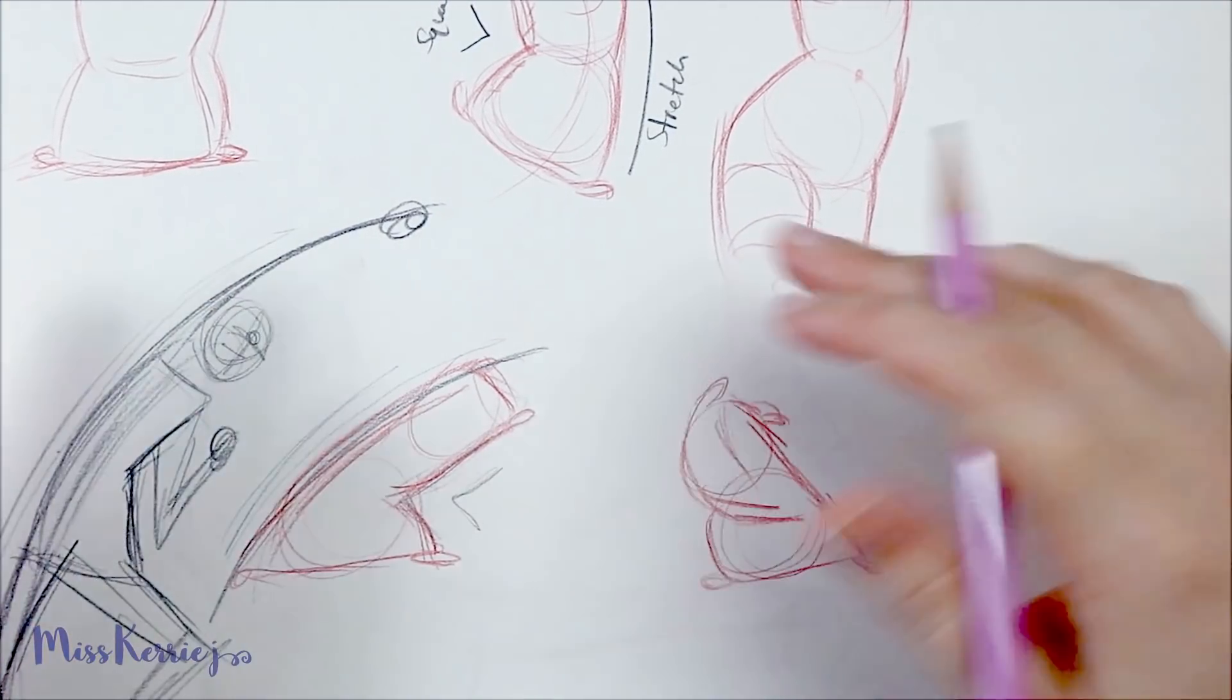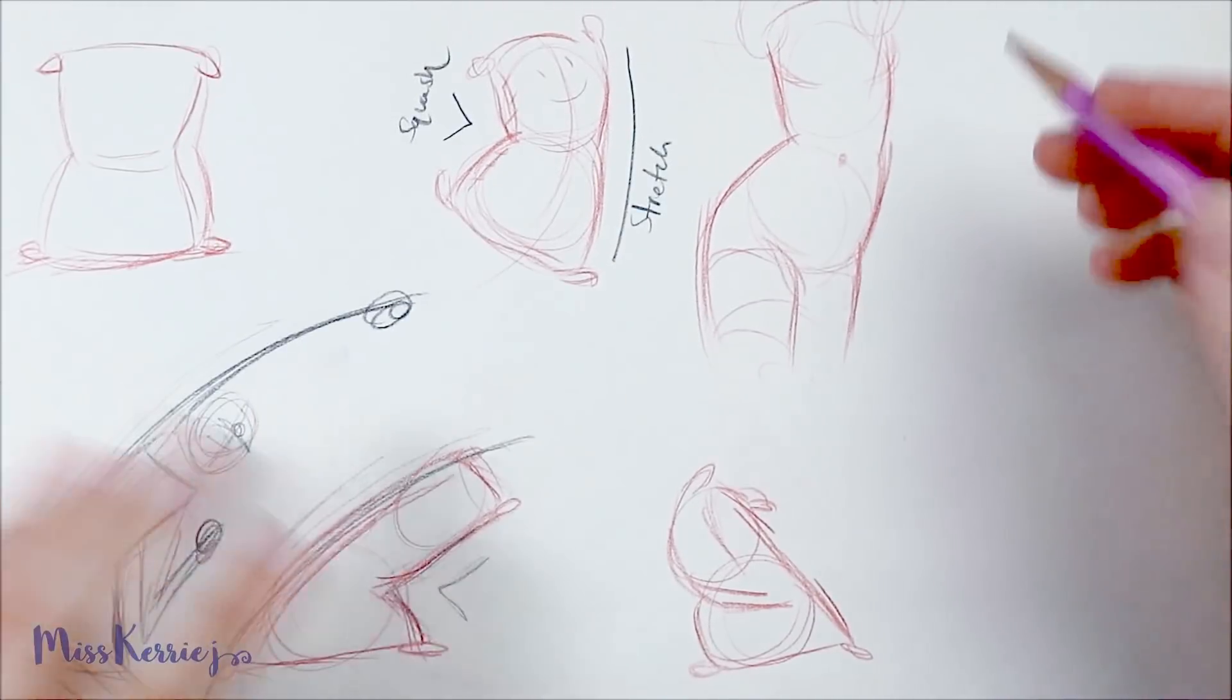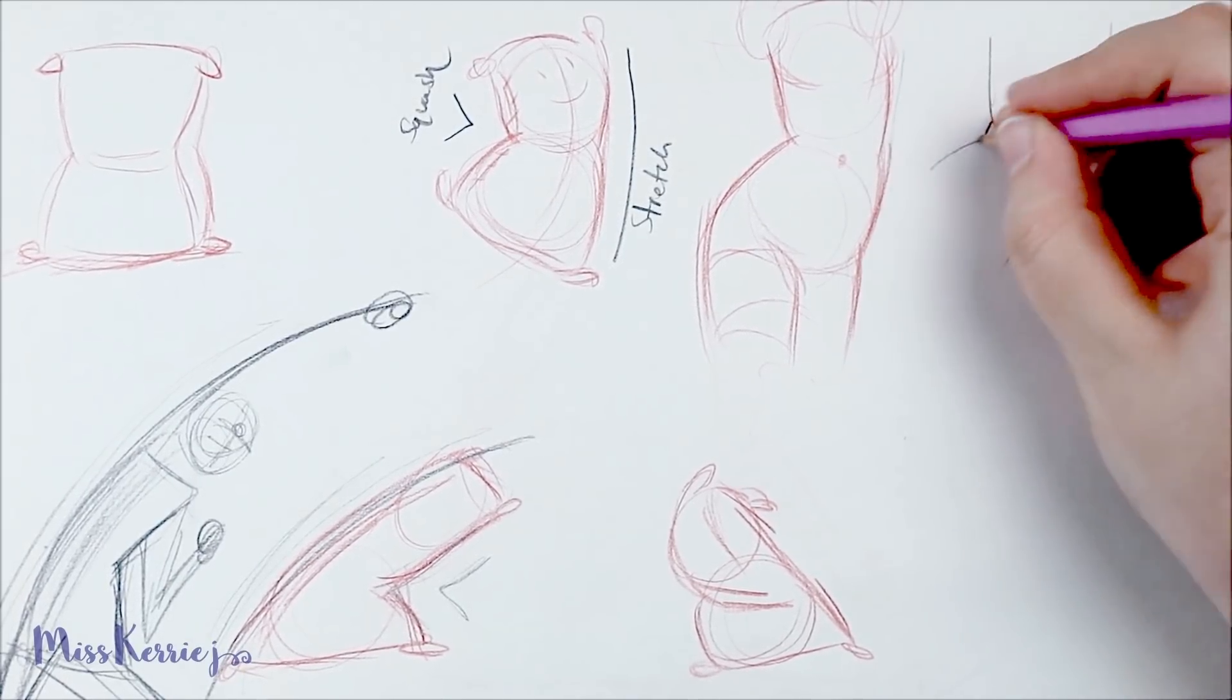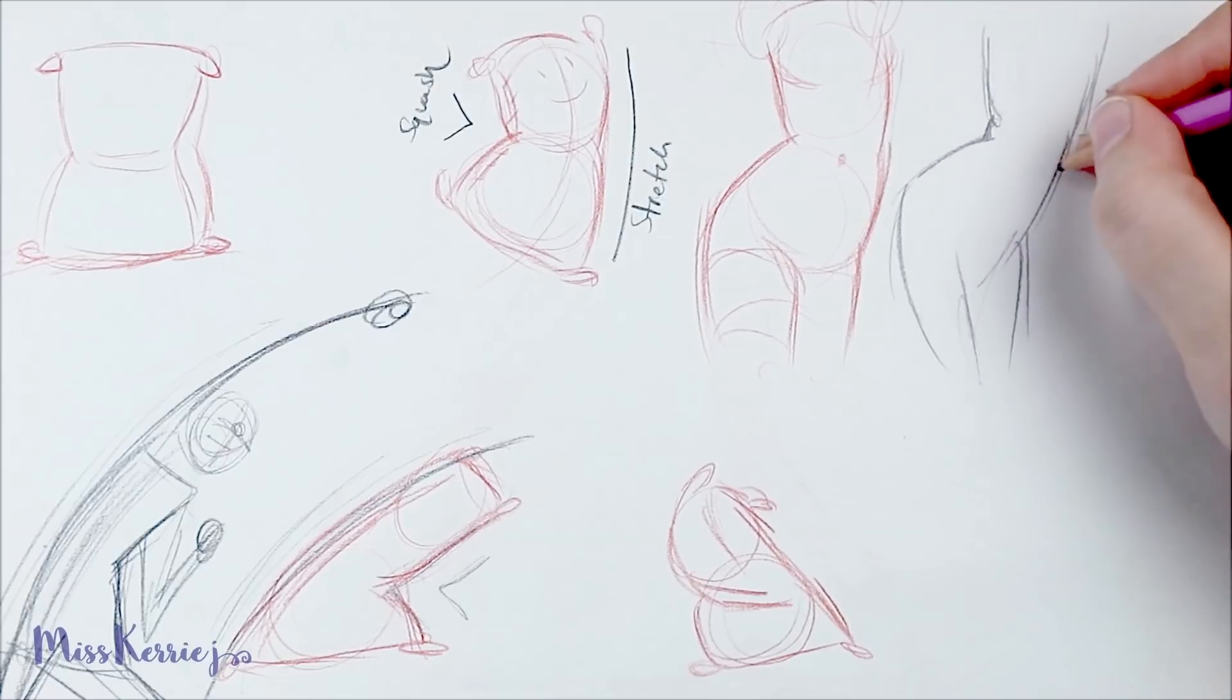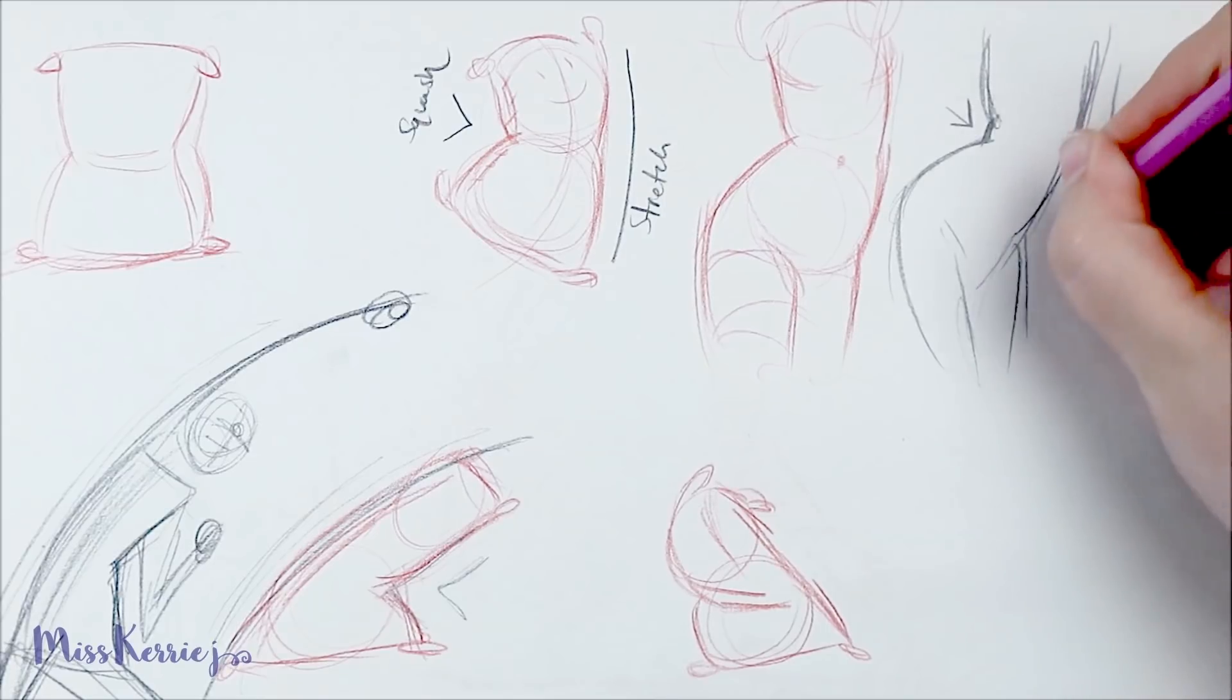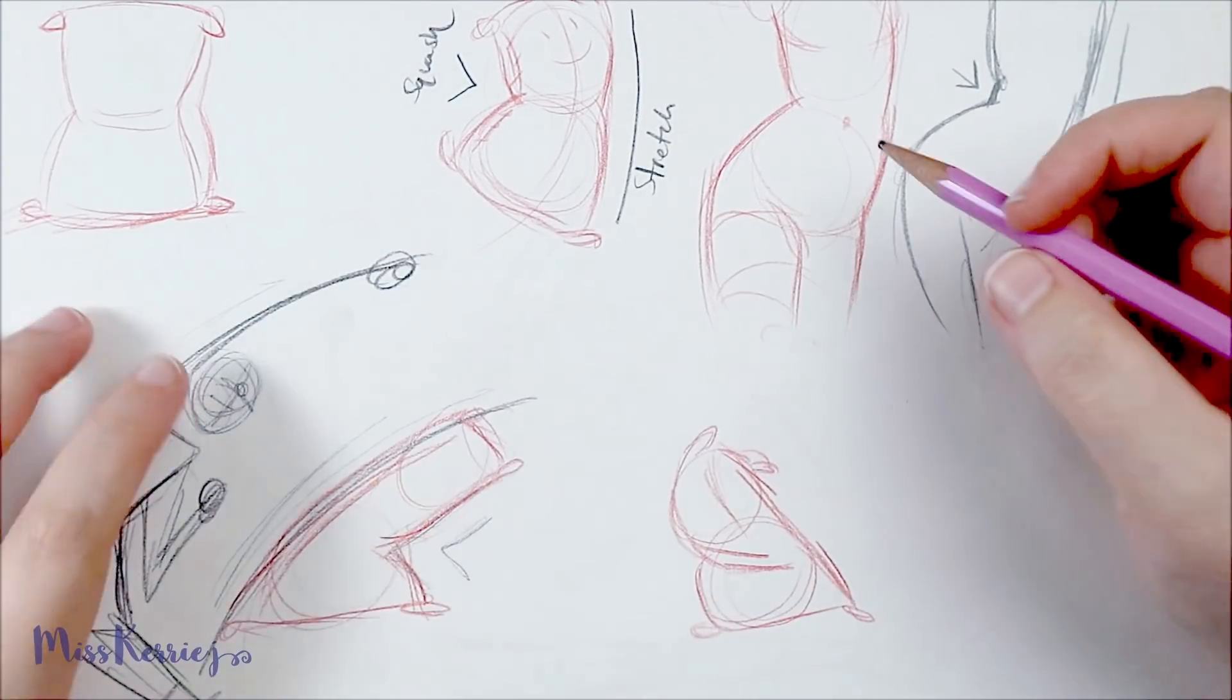The squash and stretch doesn't necessarily have to be the entire form. It can be just a little piece of the body. One of my favorite things to do is add this little bend in the torso right here. Normally, I would do something similar to this but add a fold because I like the skin to have a bit of chub to it. This would be my squash right here and my stretch here. You can add it in the shoulders and the legs and the arms. The way the arms stretch and compress can show squash and stretch.